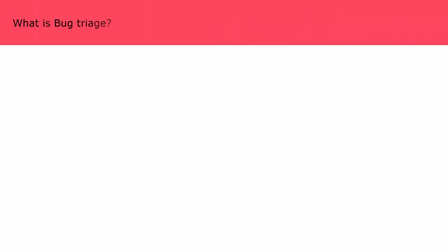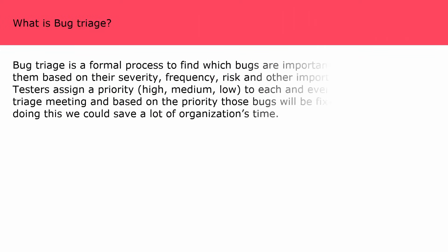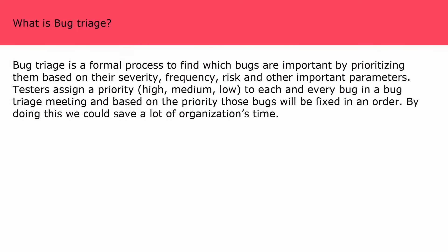Bug triage is a formal process to find which bugs are important by prioritizing them based on their severity, frequency, risk, and other important parameters. Testers assign a priority to each bug in a bug triage meeting, and based on the priority, those bugs are fixed in order. By doing this we can save a lot of the organization's time.